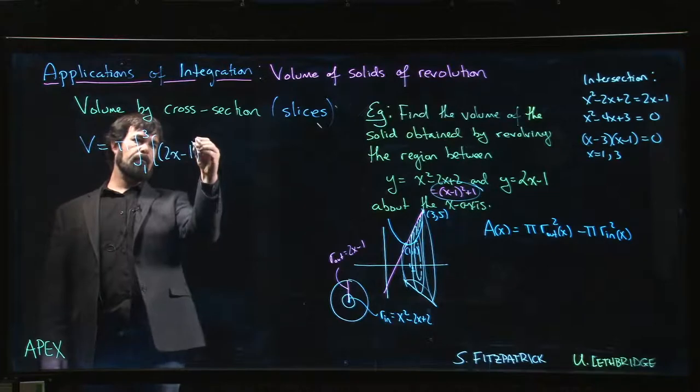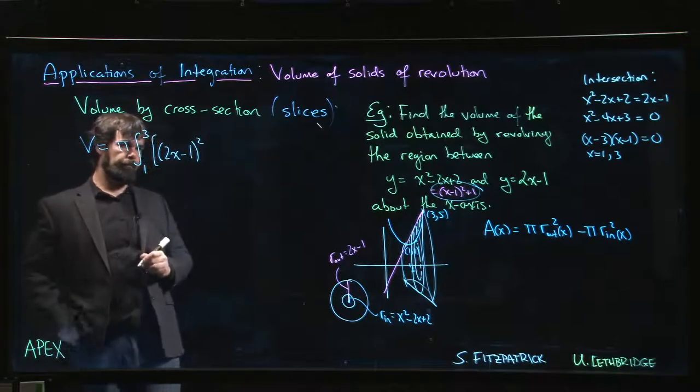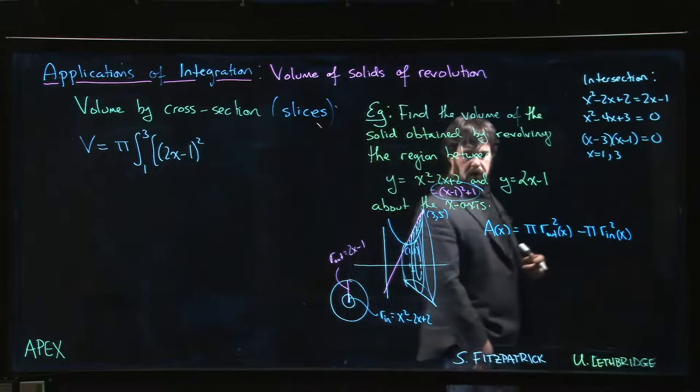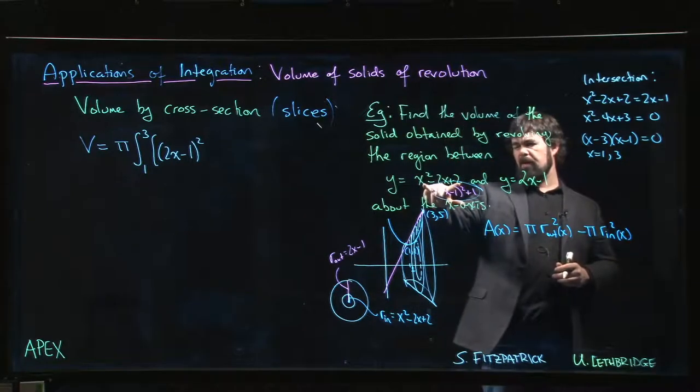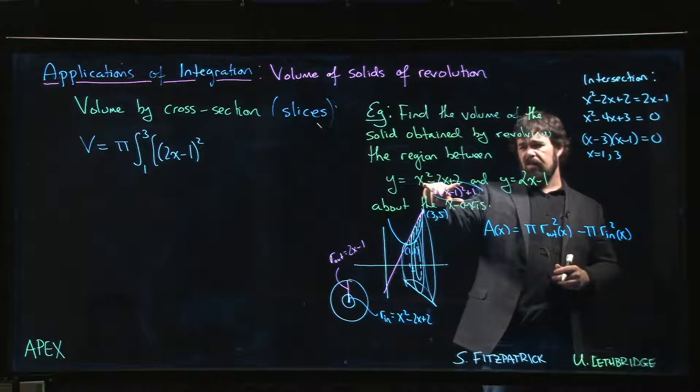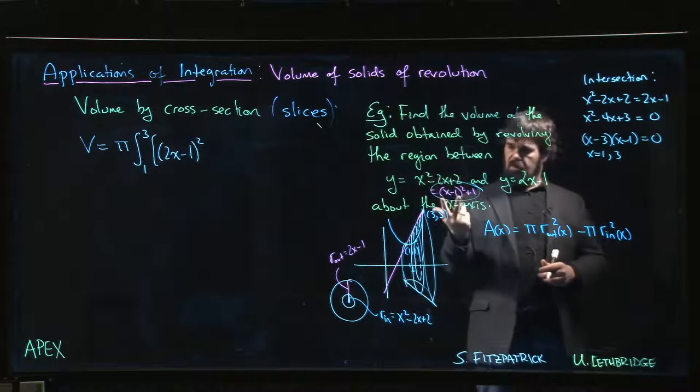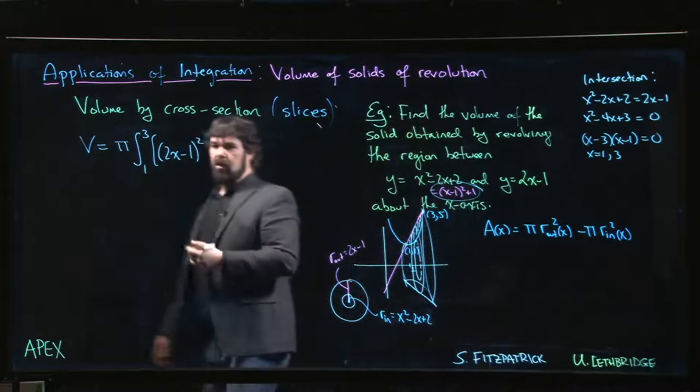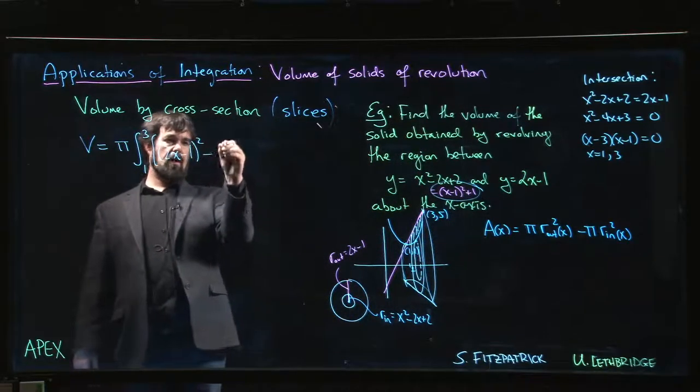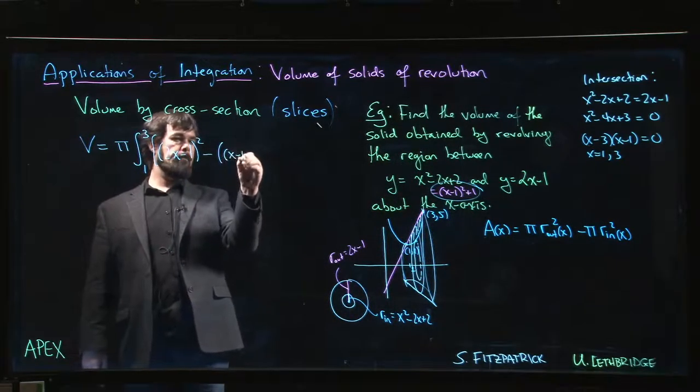Right, so we do 2x minus 1, we square it. Okay. For the inner curve, the inner curve is given by this quadratic, and now maybe you don't really want to square a trinomial. Like it's a little bit annoying. So if you want to, you could use the completed square version here.